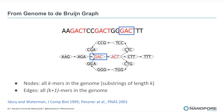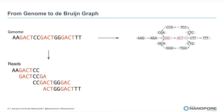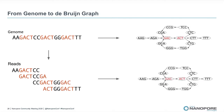This means that the de Bruijn graph collapses repeats on a path into the same path. We can build this graph from the genome. In the case of genome assembly, we have reads — and we can apply the same algorithm to build the de Bruijn graph from reads. If you are careful, the resulting graph will be exactly the same as if it had been constructed from a complete genome.